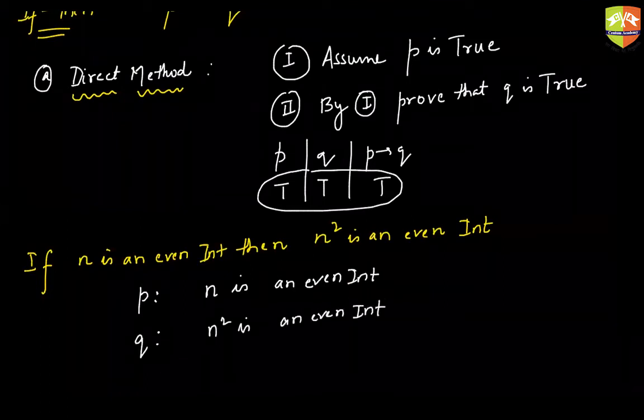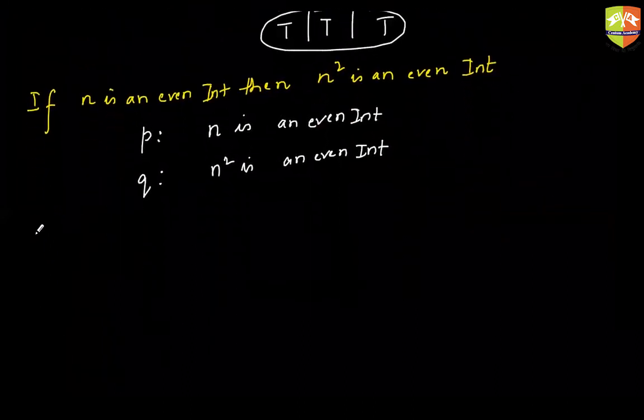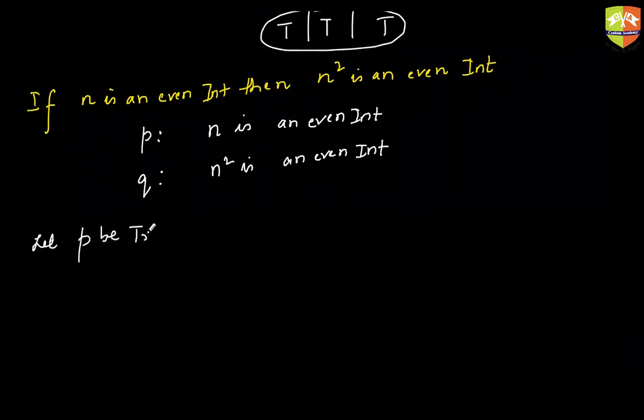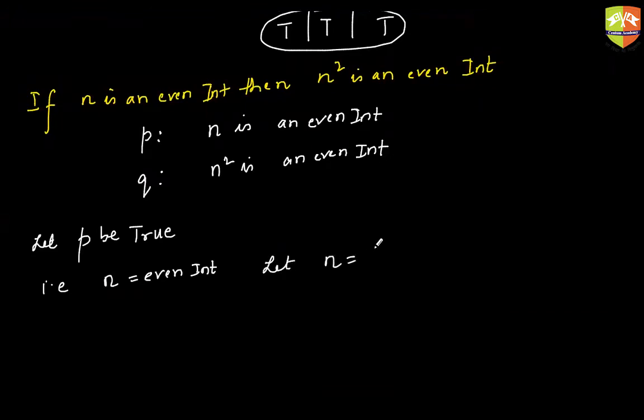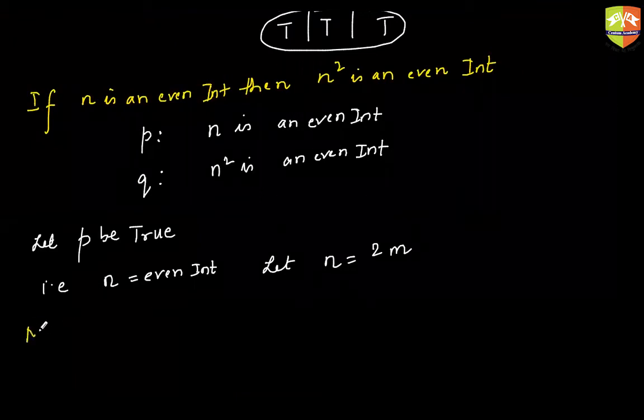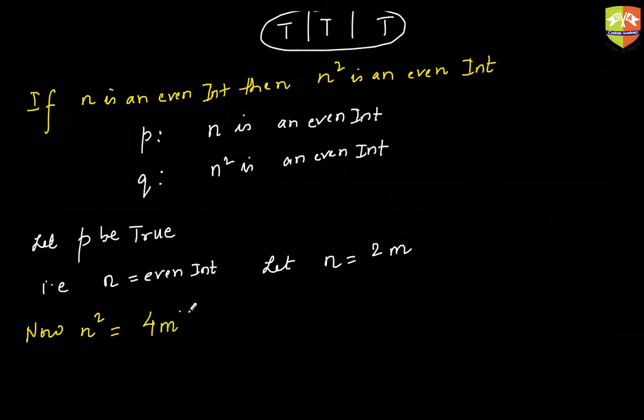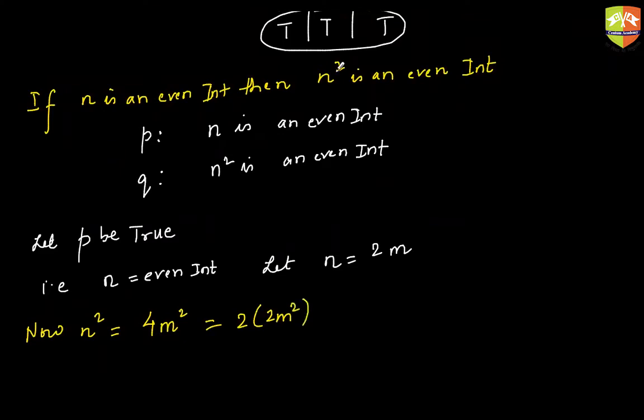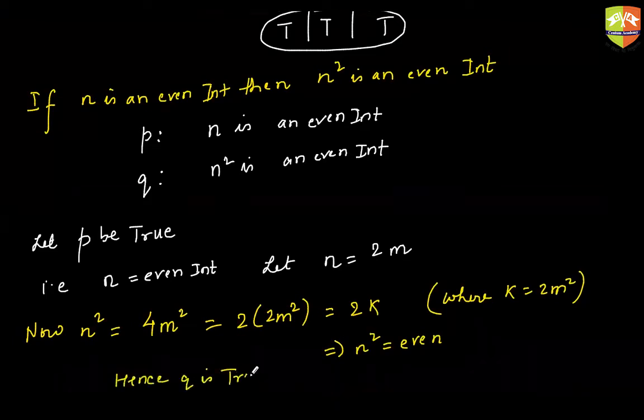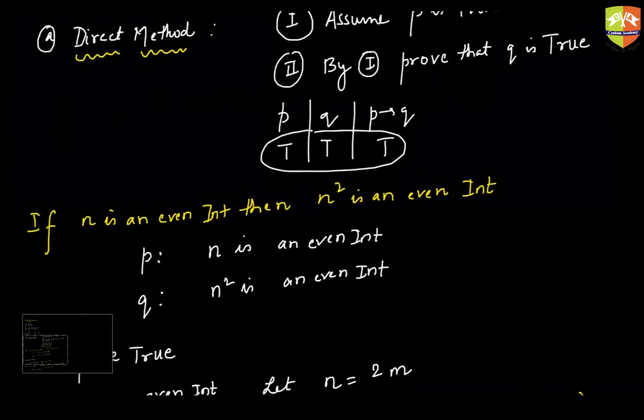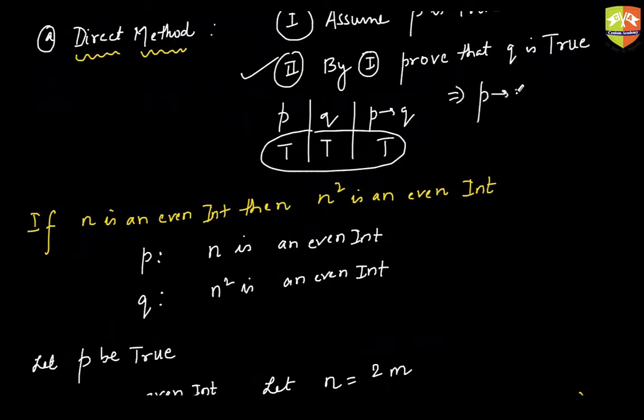Now, by direct method, we will first say, let P be true. That is, you're saying n is an even integer. So let n be 2m. Now, what is n²? n² can be written as 4m². So now you can write this as 2k, where you are calling k as your 2m², which definitely implies that n² is even. That means you have proved that Q is true. So by assuming P is true, if you have been able to prove that Q is true, that means it implies this is also true by this truth table.